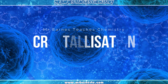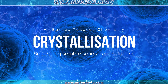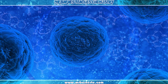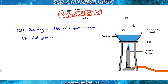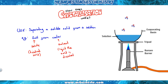Welcome to this video looking at how you can use crystallization to separate a soluble solid from a mixture. Starting with the use: it's separating a soluble solid from a solution. For example, we're taking salt and removing it from water. In this instance, our salt is our solute — our dissolved solid — and our water is our solvent, the liquid the solid is dissolved in.